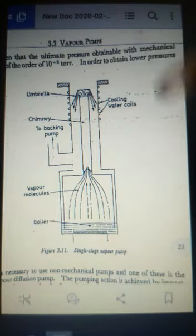This is a single stage vapor pump. It has been seen that the ultimate pressure obtained with mechanical pumps is of the order of 10 power minus 3. We already discussed in last class we get the pressure 10 power minus 3 torr, but in order to obtain lower pressure it is necessary to use non-mechanical pumps.